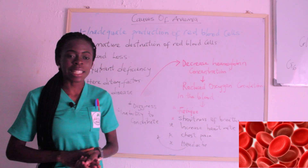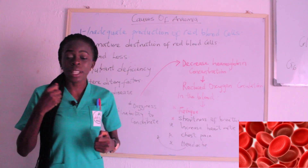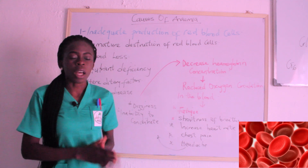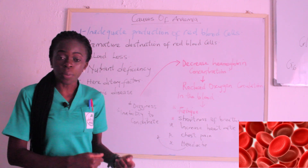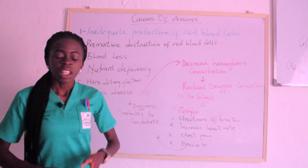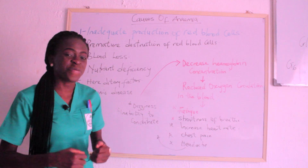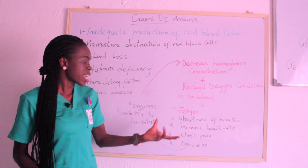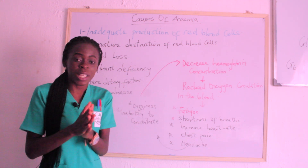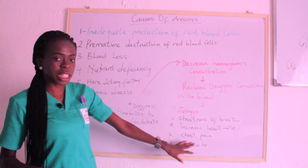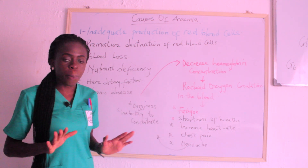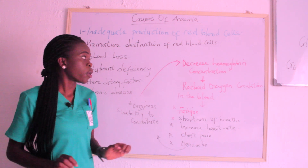Anemia results from a reduction in hemoglobin concentration or red blood cell concentration in the body. Since hemoglobin helps transport oxygen and carbon dioxide, when there is reduced hemoglobin, there is reduced oxygen circulation. The tissues in the body will not be getting enough oxygen. As a result, you will see the person very tired — the patient will be fatigued, having shortness of breath, increased heart rate, and chest pain, as the heart works very fast trying to compensate. There will also be headache, dizziness, and inability to concentrate. These are the likely signs and symptoms that appear with anemia.